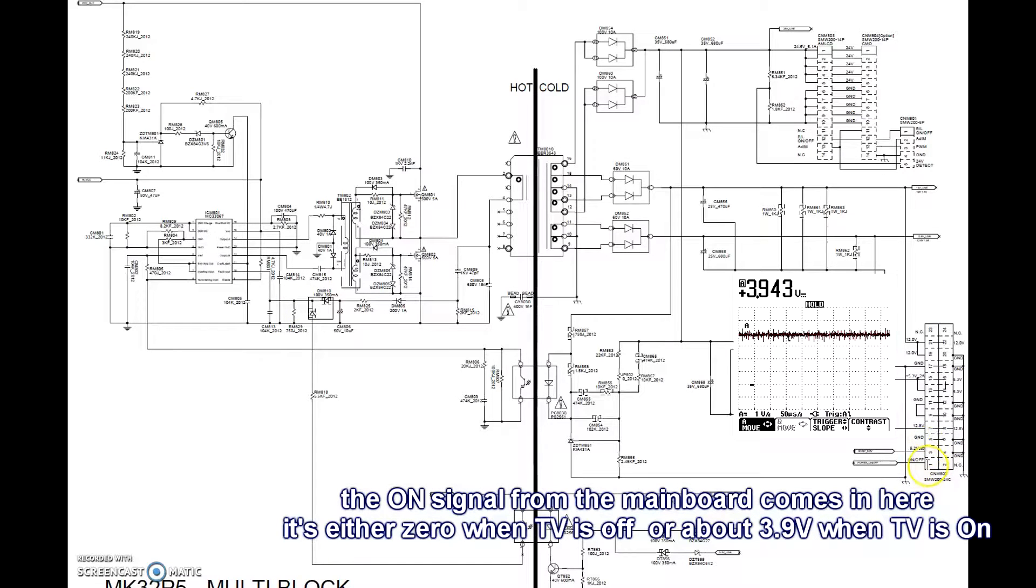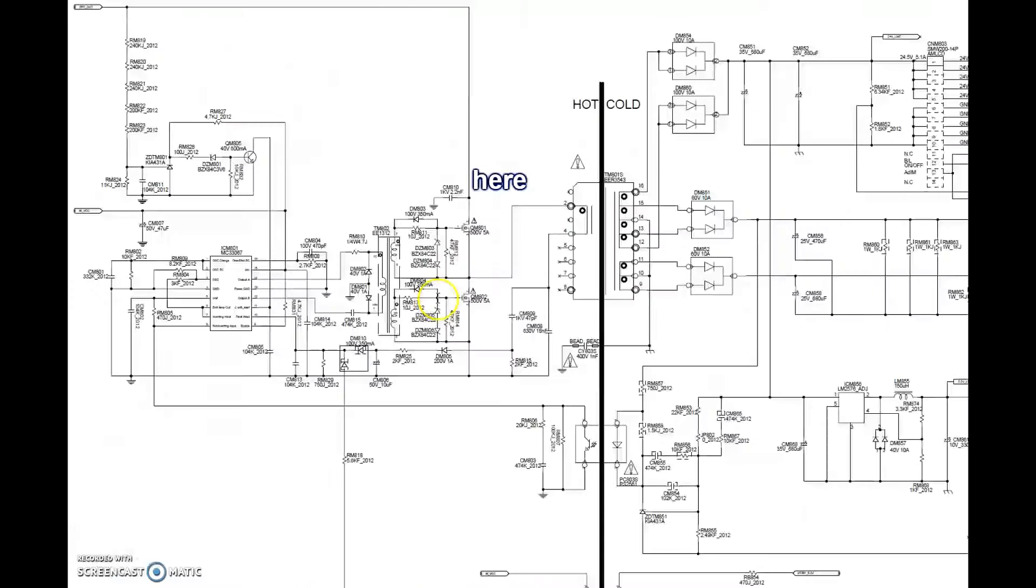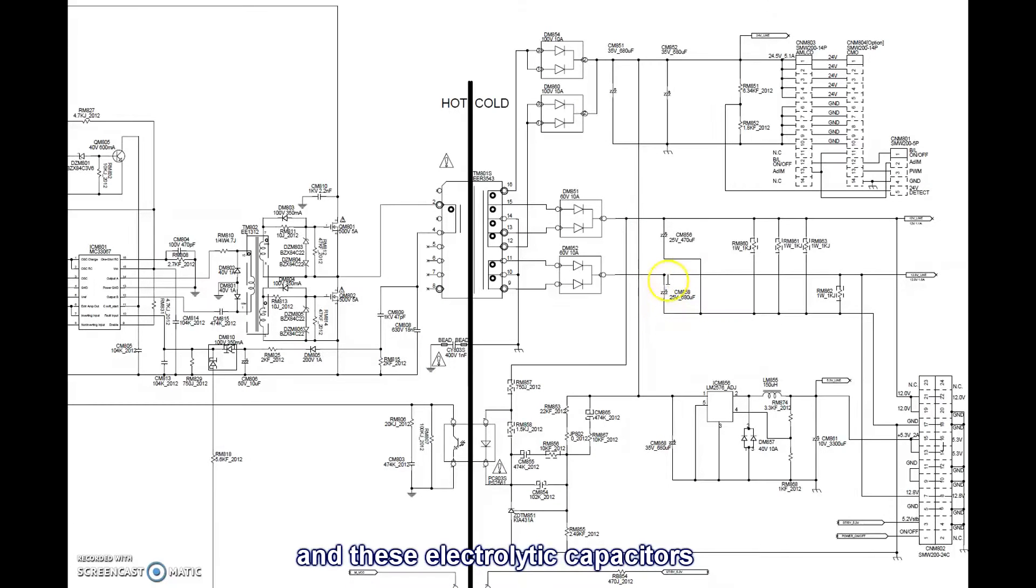The ON signal from the mainboard comes through here. It's about 3.9V. So the thing is, watch out for bad solder joints on this transistor, then on these two transistors as well. Actually every component that may be heating, so every component that's mounted on heat sinks. The electrolytic capacitors and the 18 nF capacitor as well.